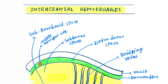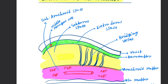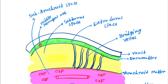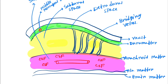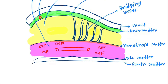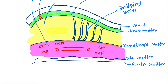Hello friends, today our topic is intracranial hemorrhages. Before going to the lecture, first see the diagram — this diagram will contain every injury to the cranial. The layers you have to know: this is the dura mater, this layer is the dura mater, next this is the arachnoid mater, and this is the pia mater, and this is the brain matter.